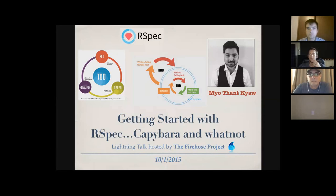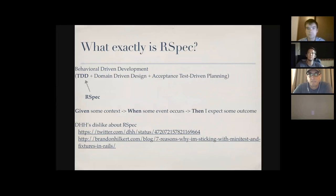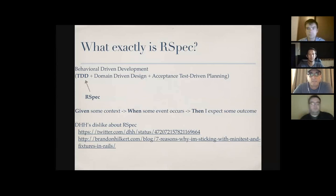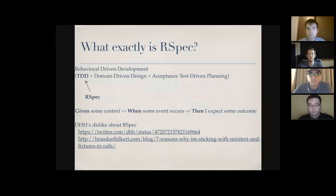RSpec is a TDD framework, just like Rails test unit. RSpec positions itself as one of the tools you use when doing BDD — Behavioral Driven Development — which consists of TDD, domain-driven design, and acceptance test-driven planning.